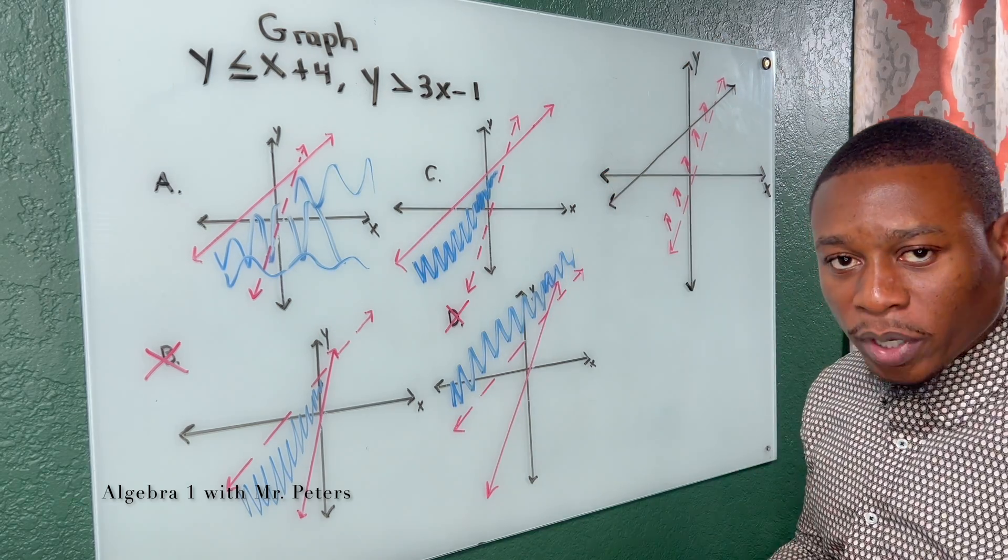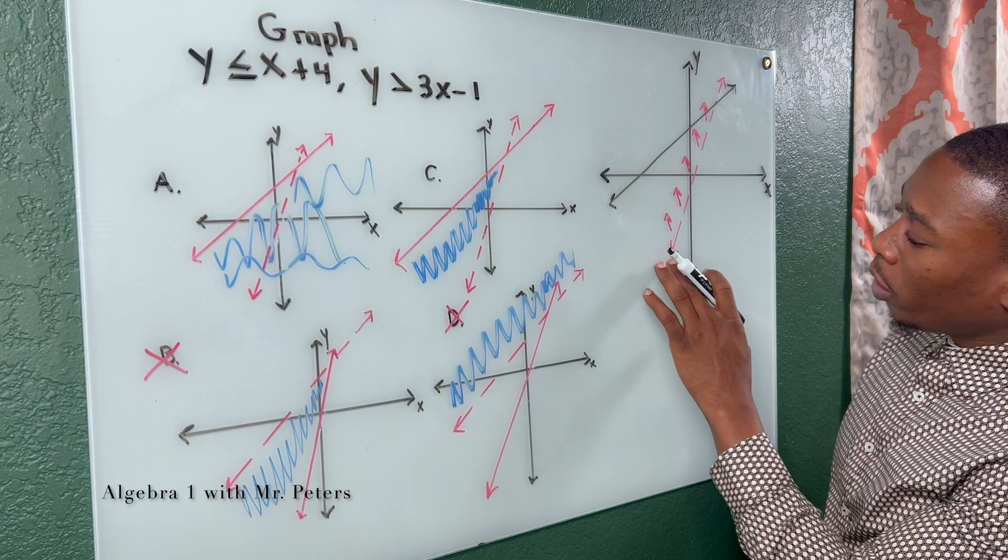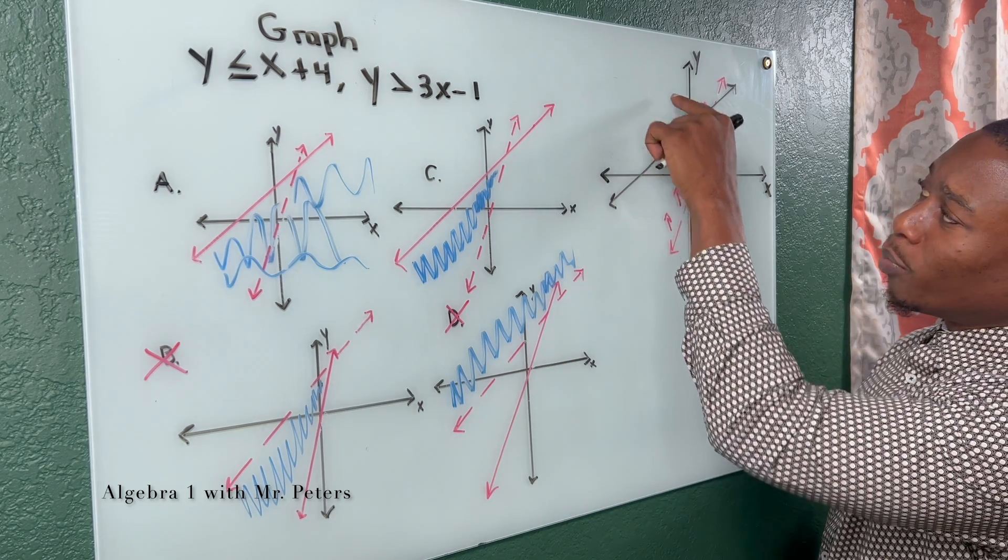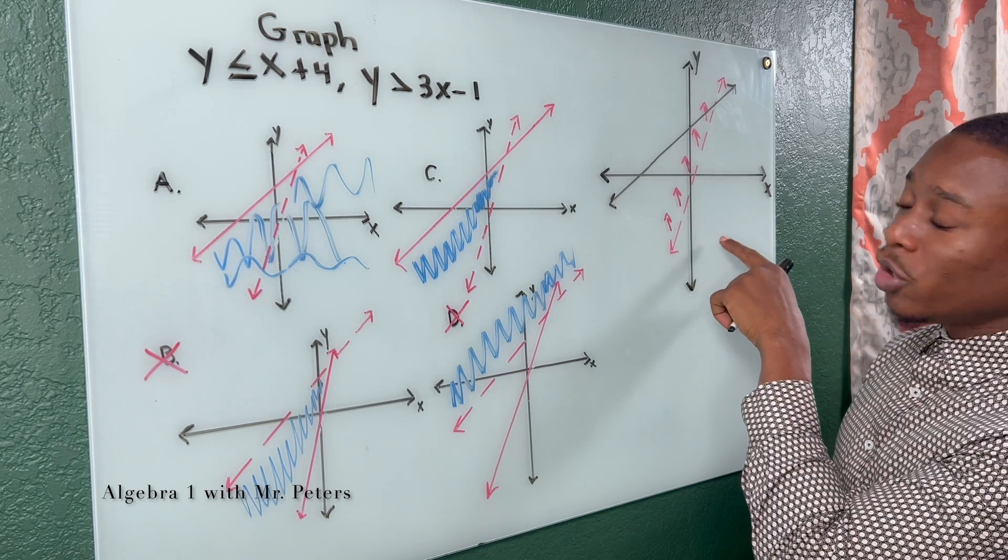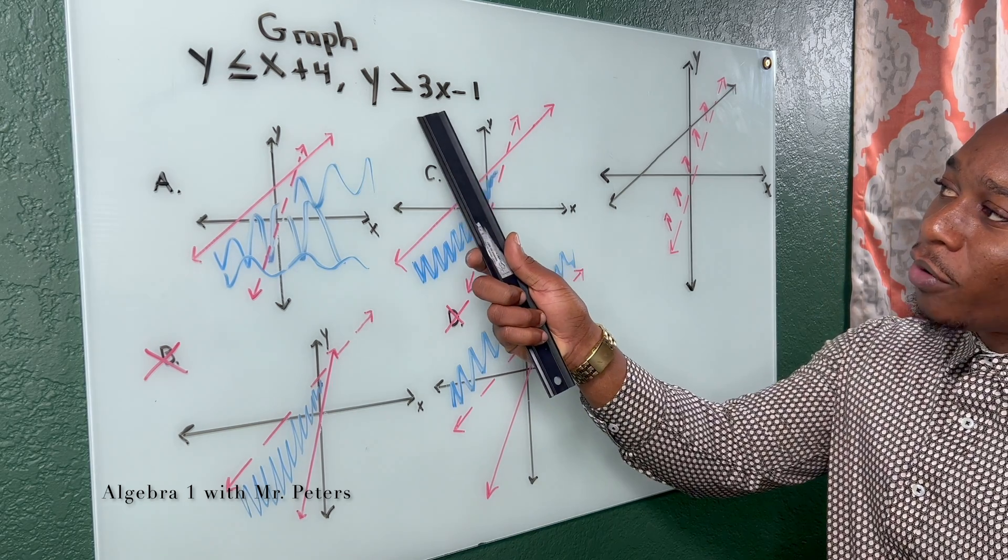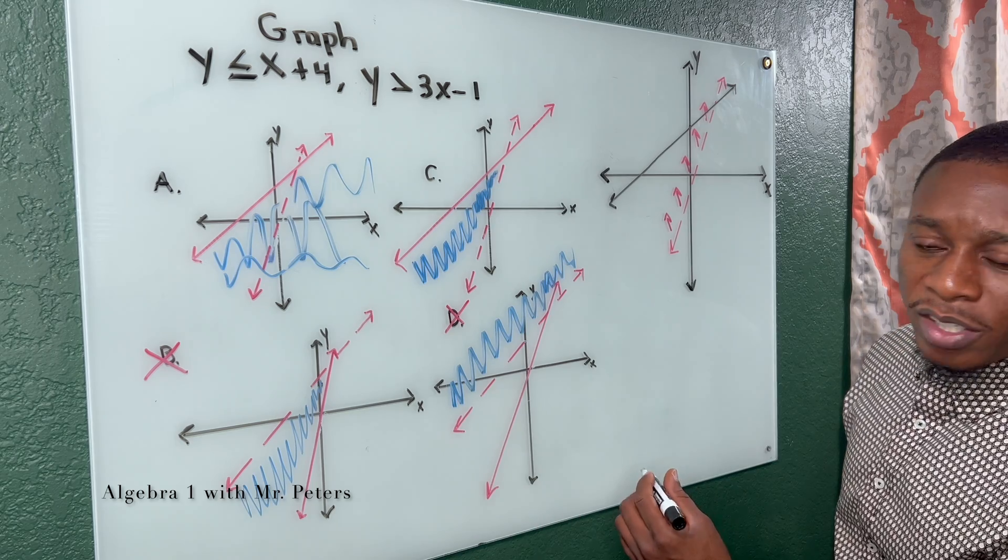And whenever you're picking points, the reason I know when they say shade, when they say greater than or equal to, we always shade above the line. And then when they say less than, you shade under. Another way to do this is, let's say for this first one, the red line. Let's say we plugged in 0.